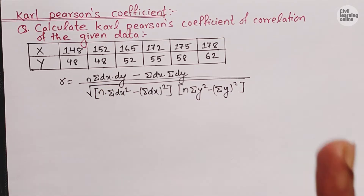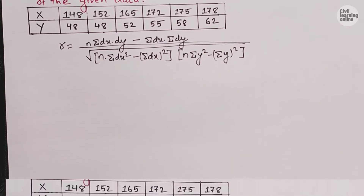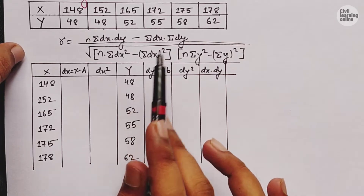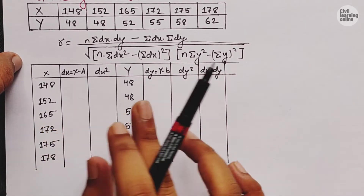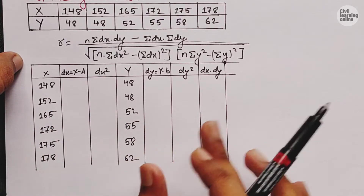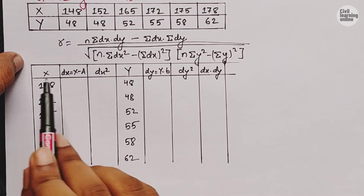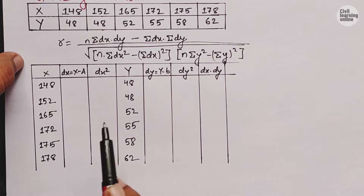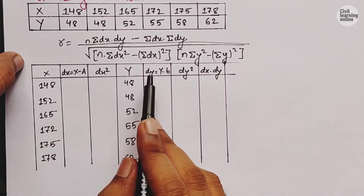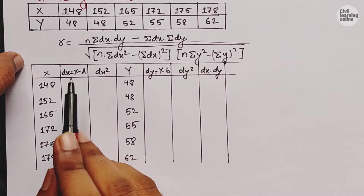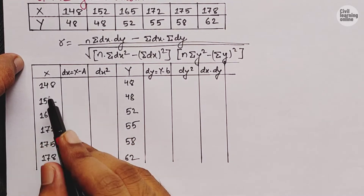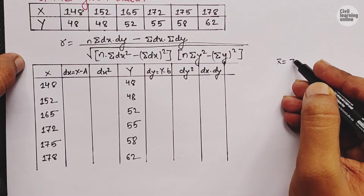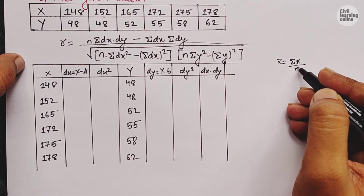I have drawn a table as per the formula. The formula has several variables and we need a table to calculate their values. We have columns for x and y, and I have substituted the values of x in the x column and y in the y column. Now we need to know what dx and dy are. First, we need to find 'a', which is the mean of the x terms.